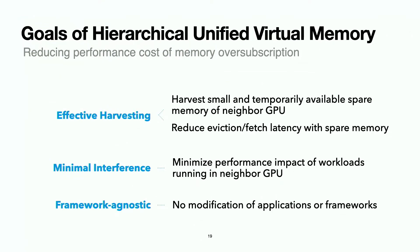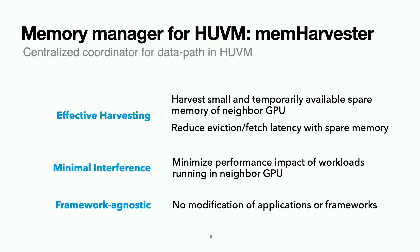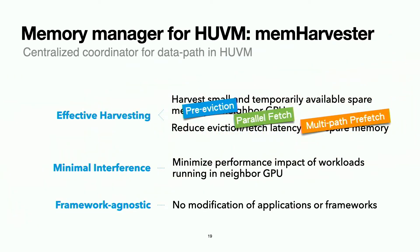To recap: we proposed HUVM, a new data path with NVLink to reduce the performance cost of memory over-subscription, with goals of effective harvesting, minimal interference, and framework agnosticism. To achieve these goals, we propose MemHarvester, a centralized coordinator supporting pre-eviction, parallel fetch, and multi-path prefetch for effective harvesting; removable pages for minimal interference; and leveraging UVM to become framework agnostic. We leave minimizing interference due to shared memory and PCIe bandwidth as future work.